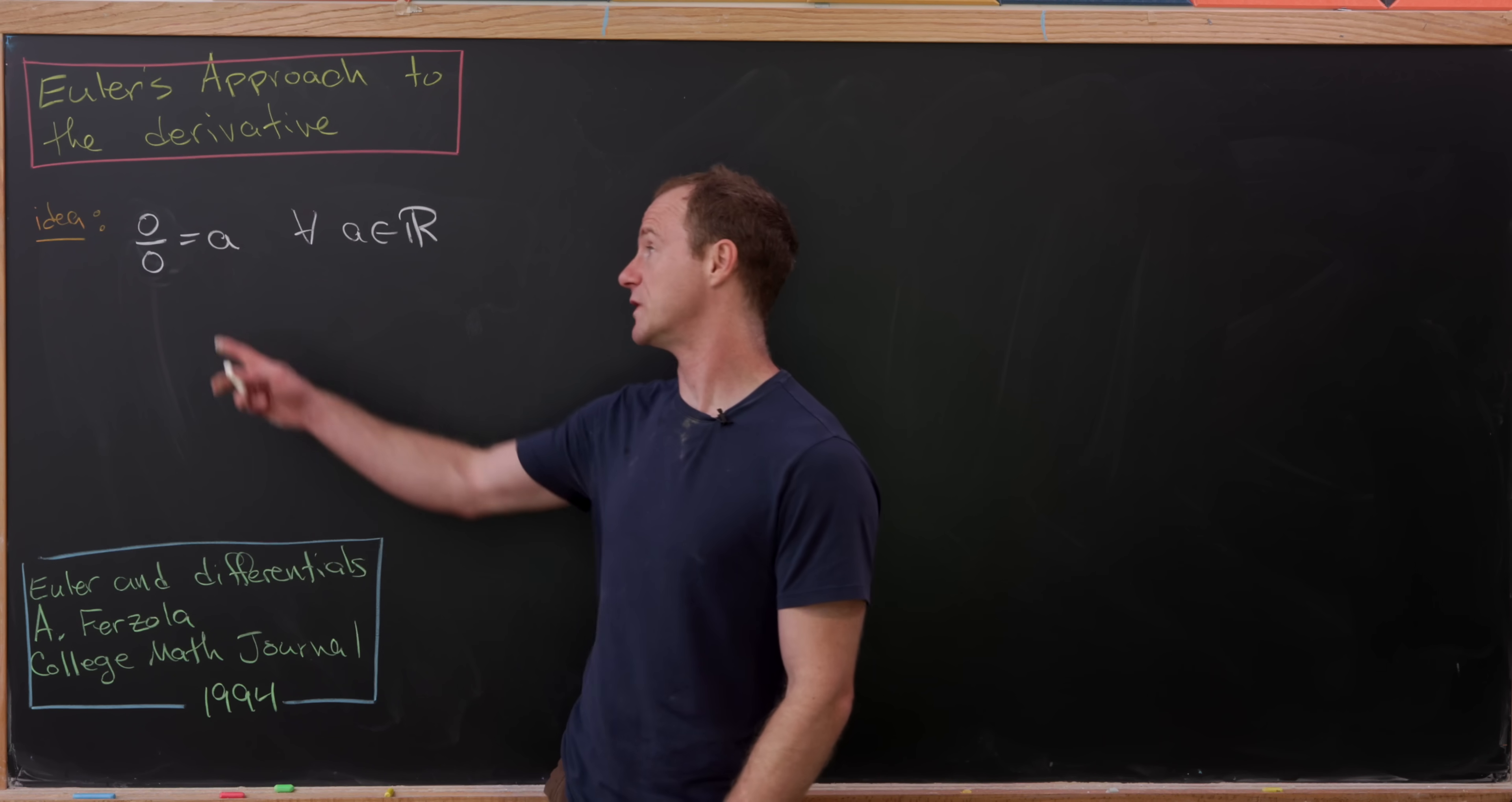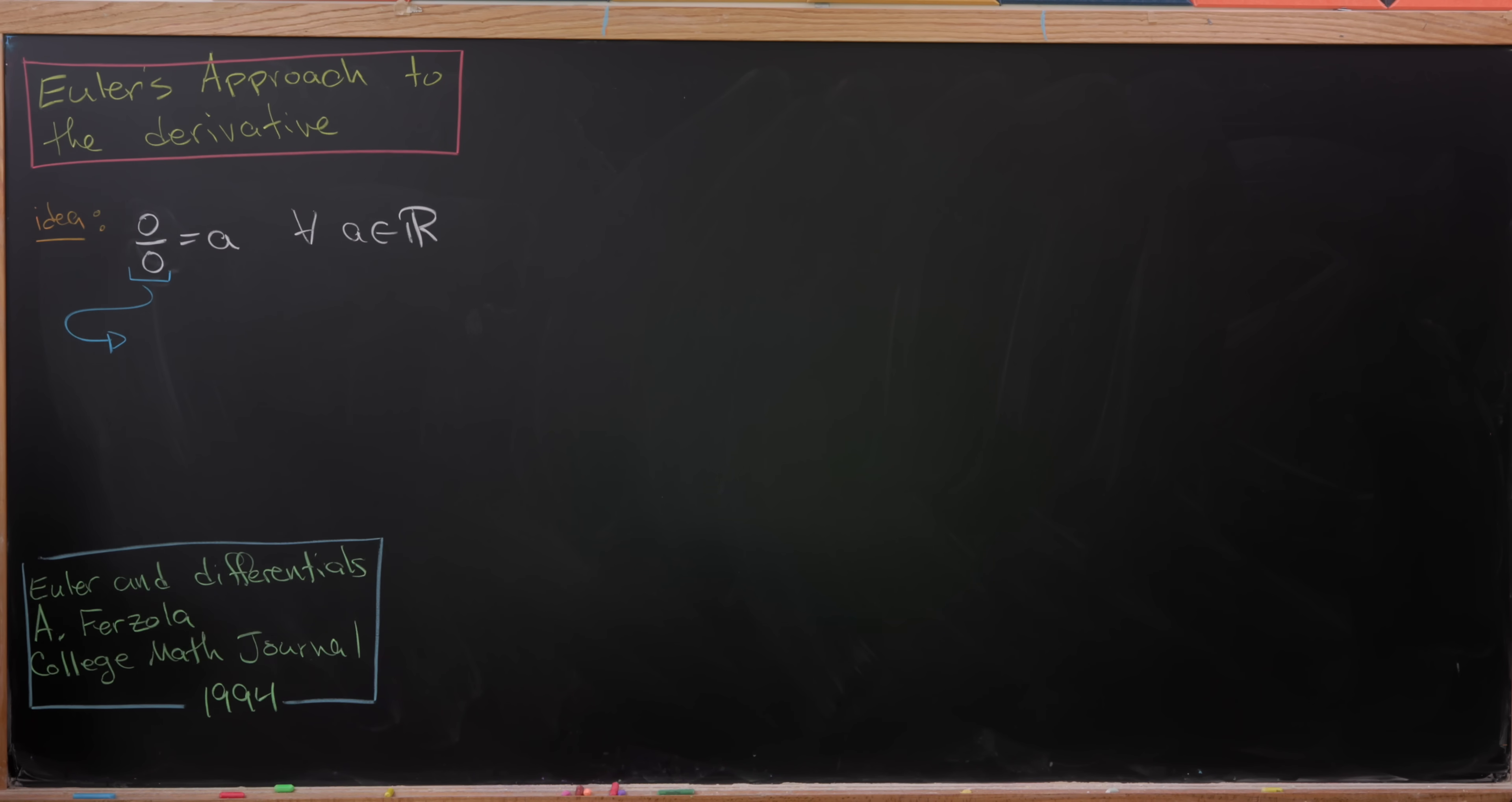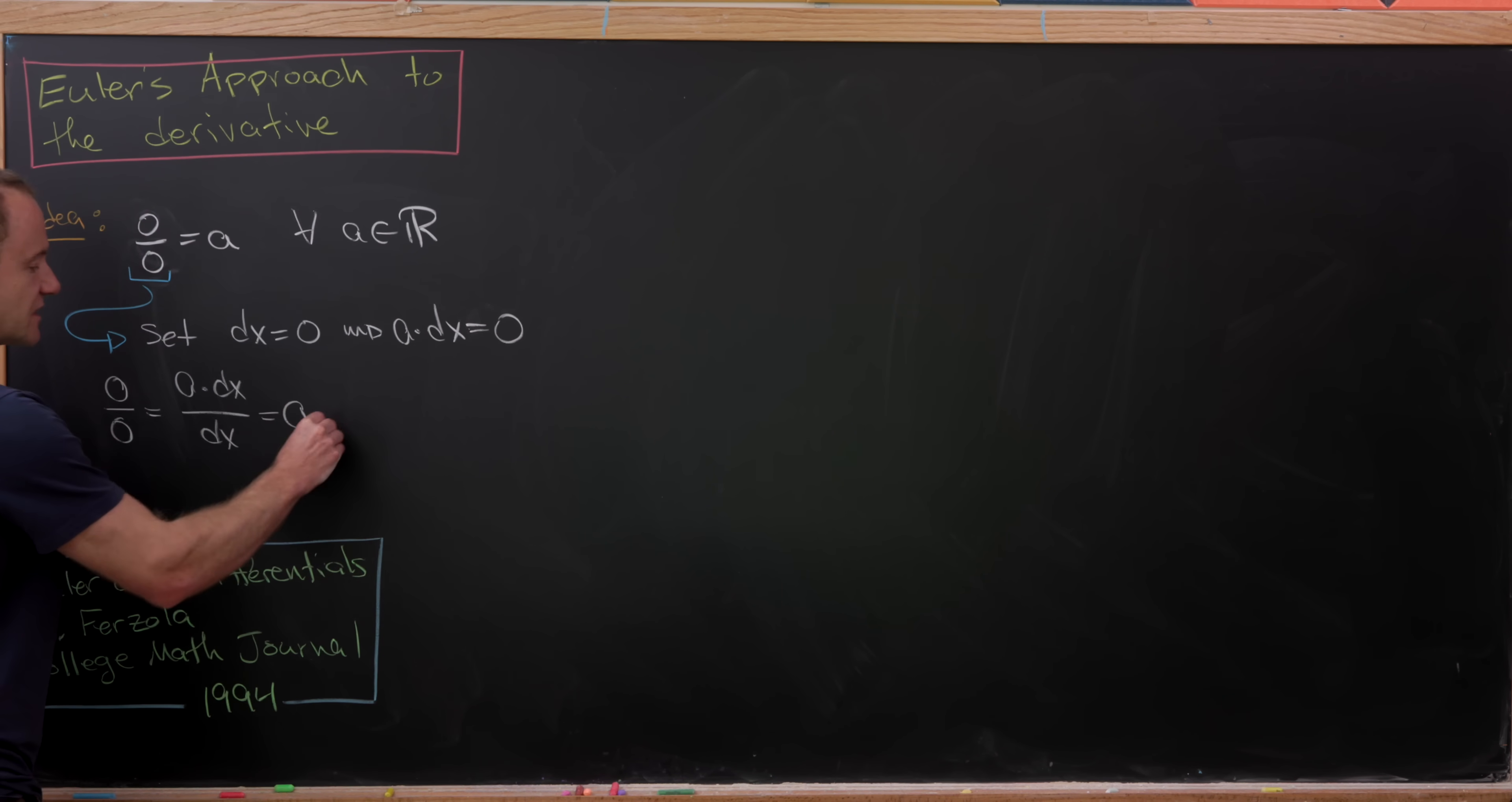But anyway, Euler's idea was that we could take the quotient of zero by itself, but we didn't just get a single number, we got every possible number. And then he said, okay, well, if zero divided by zero could be equal to any real number A, then what I should do is use different symbols for the numerator and the denominator. Let's introduce some notation. Let's set dx equal to zero. But notice that that means that A times dx is also equal to zero. So, we might think about dx as being some sort of differential, or some sort of infinitesimal, but Euler thought of it as just another way of writing zero down. Like, perhaps there are infinitely many types of zero.